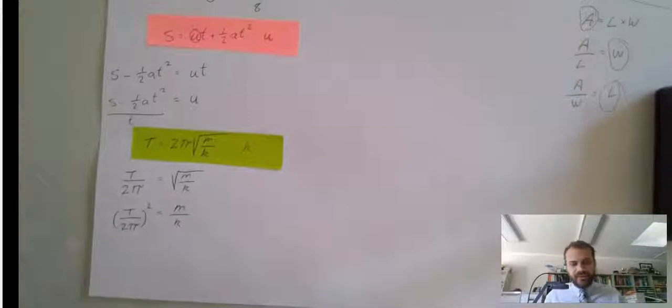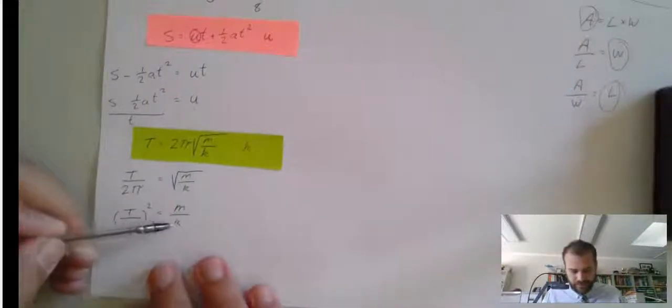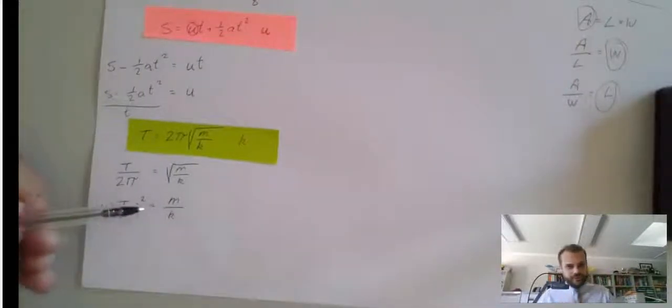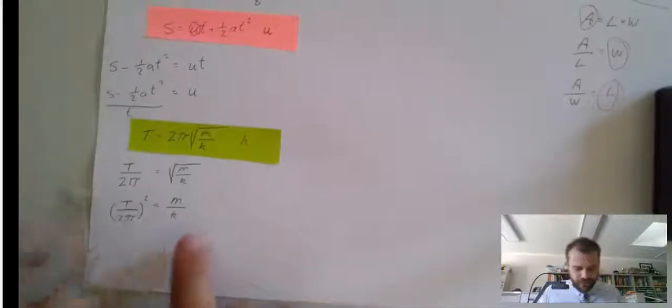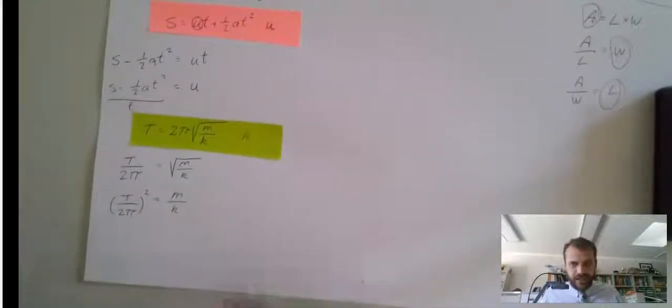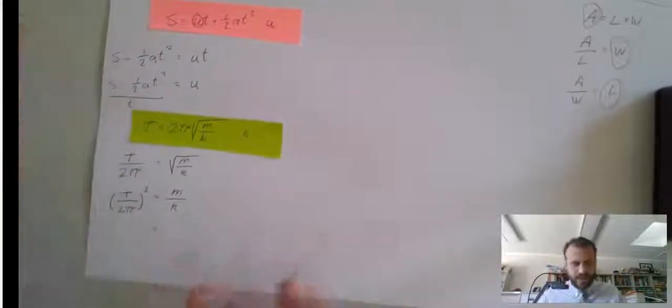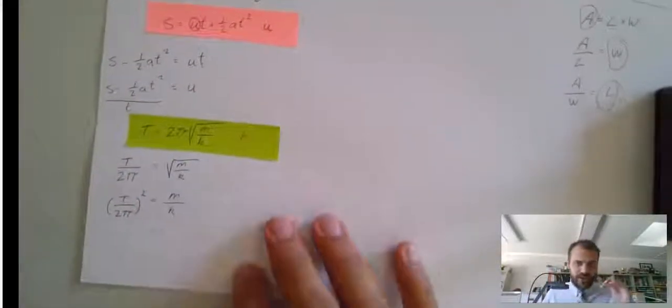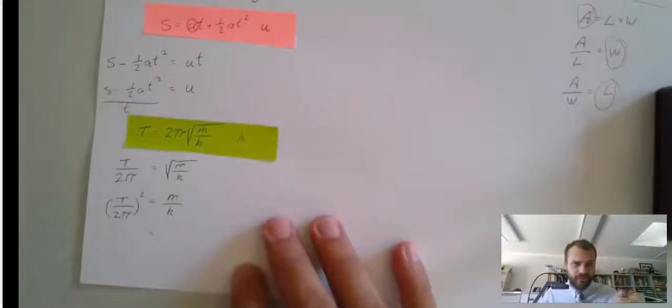And now, this is where things get a little bit complicated, because k is on the bottom. So, if I multiply both sides by k, k will come to the top. Because when we make k the subject, k needs to be on the top of the fraction, it can't be on the bottom of the fraction.